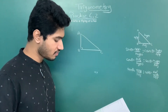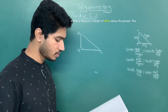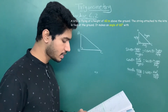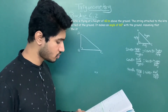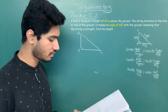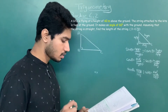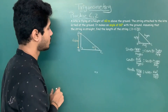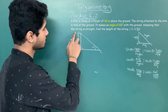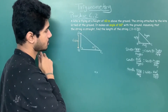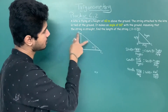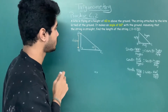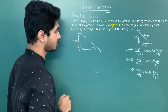Next question: a kite is flying at a height of 60 meters above the ground. The string attached to the kite is tied at the ground and makes an angle of 60 degrees with the ground. Assuming the string is straight, find the length of the string. Here AB is the height of the kite, given as 60 meters, and AC is the length of the string.